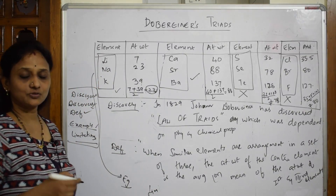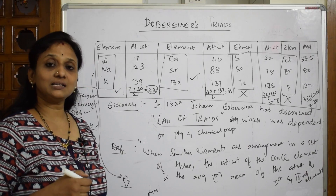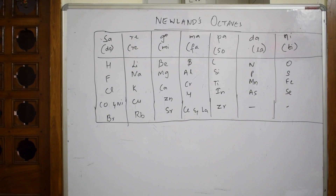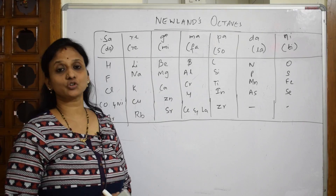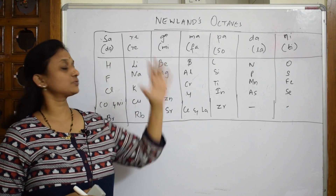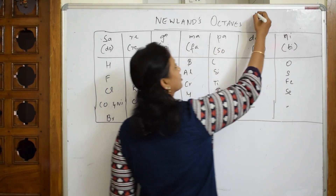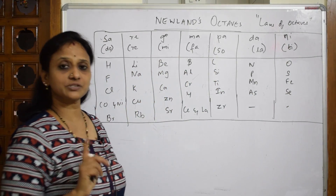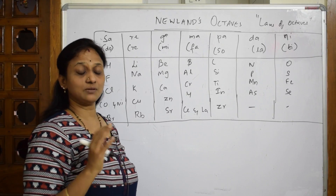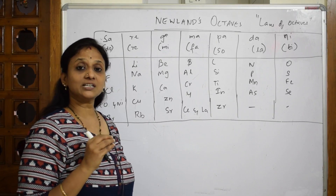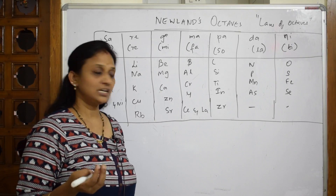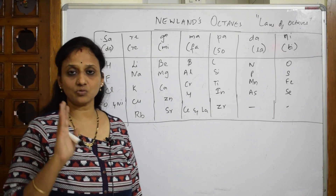So that completes Dobereiner's Triads. Now let's learn the next concept: Newlands' Octaves. The law given is called the Law of Octaves. As I said before, when explaining a concept in the exam, first write the discoverer and time period, then the name of the table, then the definition, then the example, and finally the limitations.